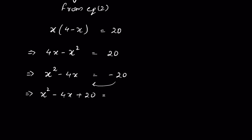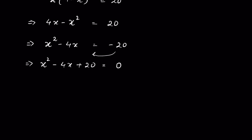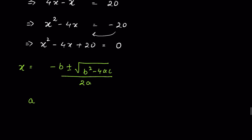Sending minus 20 to the left-hand side: x squared minus 4x plus 20 equals 0. This is in the form of a quadratic equation. We can find the roots using the formula x equals minus b plus or minus the square root of (b squared minus 4ac), all upon 2a. Here a is the coefficient of x squared, which is 1; b is the coefficient of x, which is minus 4; and c is the constant, 20.